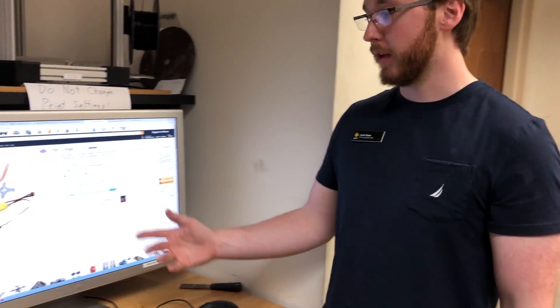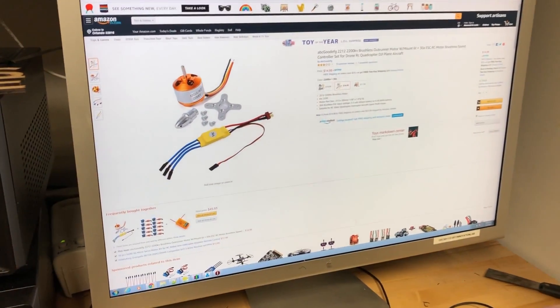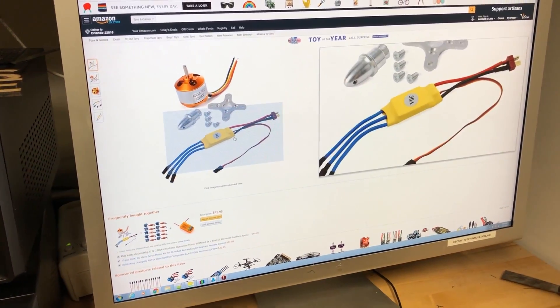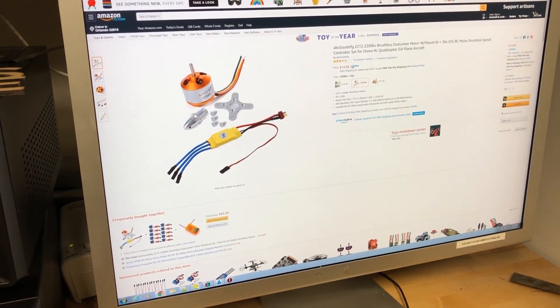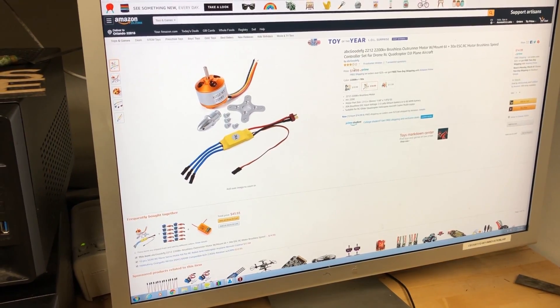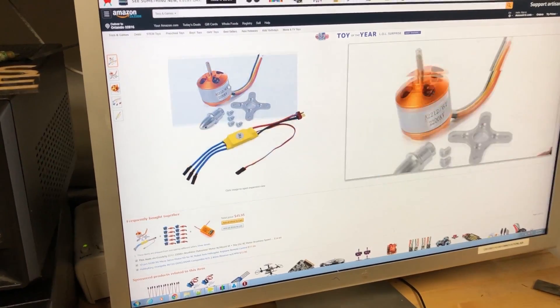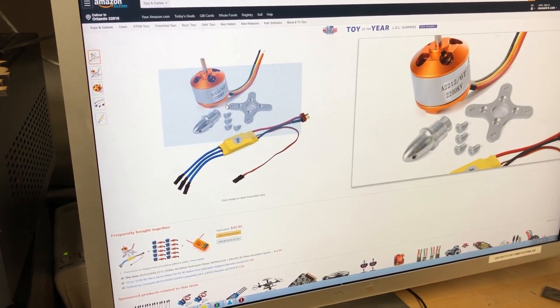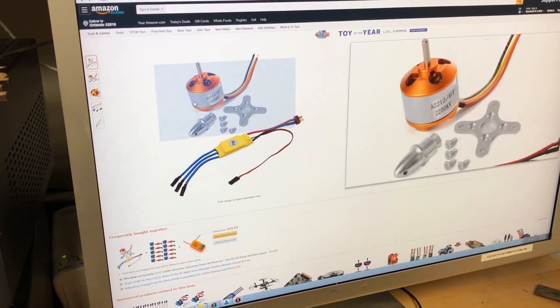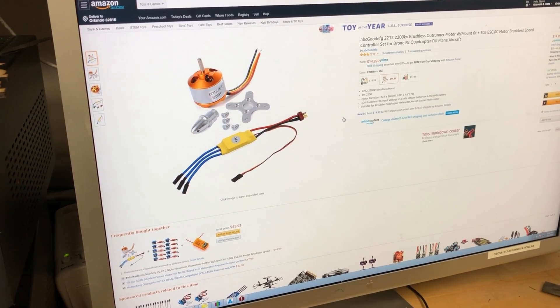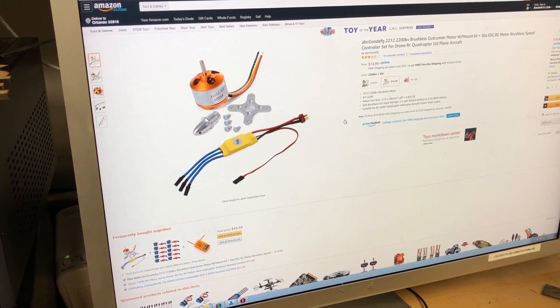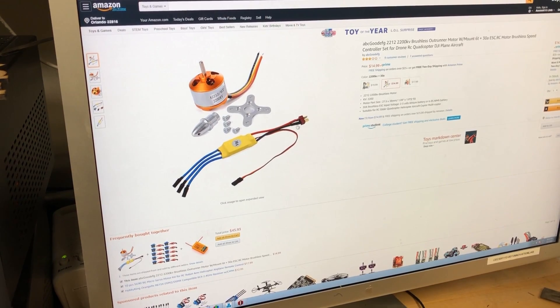Alright, so now we're going to talk about some of the recommended parts. This is a really nice little motor kit on Amazon. It's prime, so you can get it pretty quick. It's 14 or 15 bucks. It comes with the electronic speed controller, brushless motor, and mounting hardware.